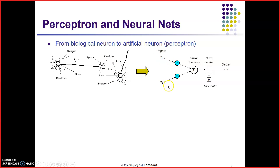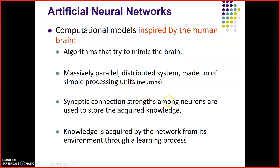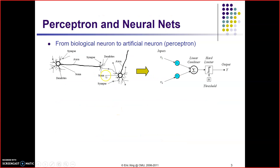Here it is equivalent to inputs. Inputs are the synapses — synapses are equivalent to inputs. Then there are the weights. Weights are equivalent to the learning knowledge. Then they are combined and after that there is a hard limiter threshold function and then output. The input nodes are denoted by the central part that is soma and the weights are denoted by the synaptic weight. Synaptic connection strength among neurons are used to store the acquired knowledge. These are the weights of the synapses.